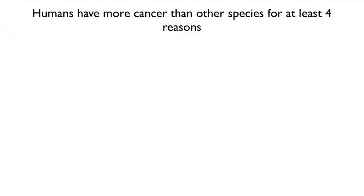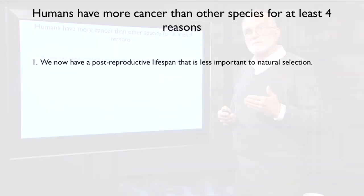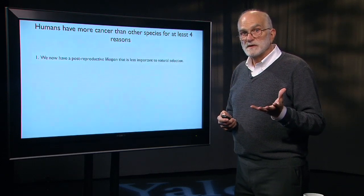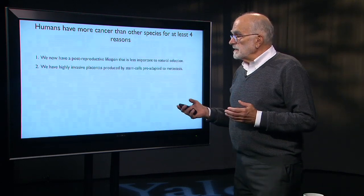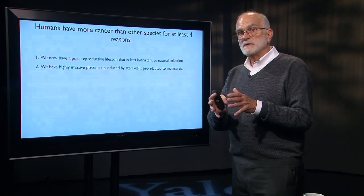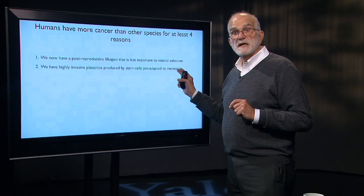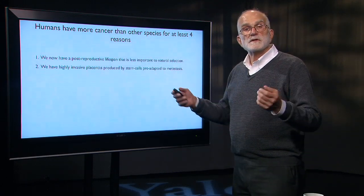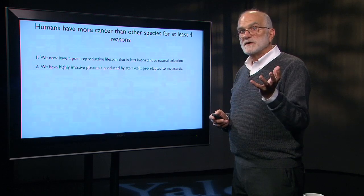We have more cancer than other species for at least four reasons. First, we live a long time — we have a post-reproductive lifespan, and people in their 70s, 80s, and 90s are largely unimportant to natural selection, so maintenance mechanisms that might prevent cancer in older humans are not evolving to improve. Second, we have especially highly invasive placentas produced by stem cells that can move into the endometrium, remodel arteries, and insert themselves into maternal tissue. Such cells are pre-adapted for metastasis, so if one of those stem cells picks up a few mutations decades later, it already has the basic suite of characters needed to invade tissue.